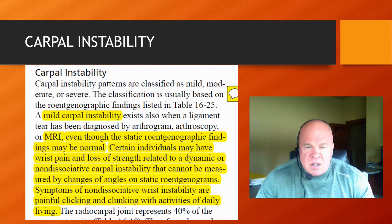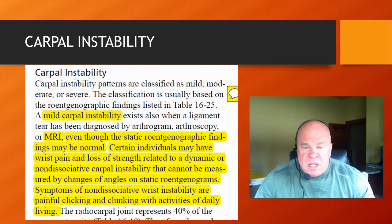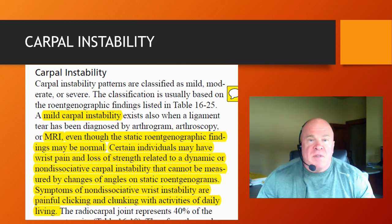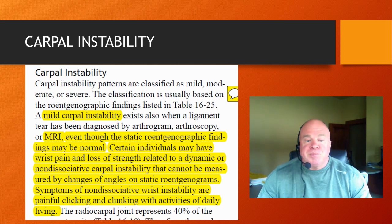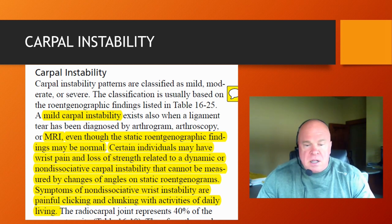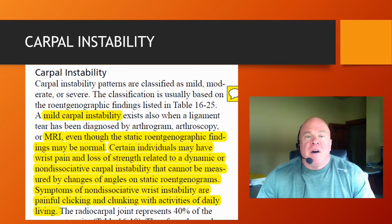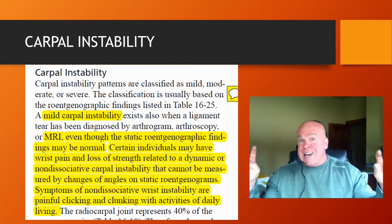This is important: certain individuals may have wrist pain and loss of strength related to a dynamic or non-dissociative carpal instability that cannot be measured by changes of angles on static radiograms. The AMA Guides will provide permanent impairment rating for this group as well, even when static radiograms are otherwise normal. Symptoms of such a non-dissociative wrist instability include painful clicking and clunking with activities of daily living — which is nothing more than an outward manifestation of the wrist being unable to maintain its normal alignment under physiologic loads.